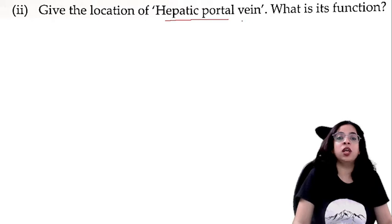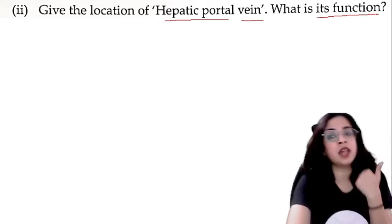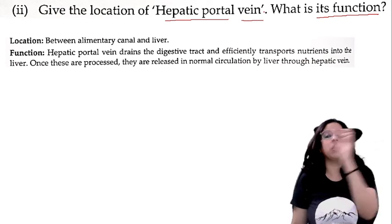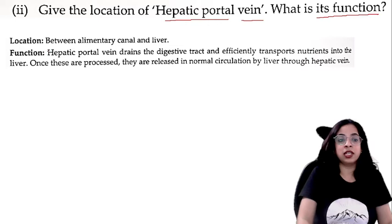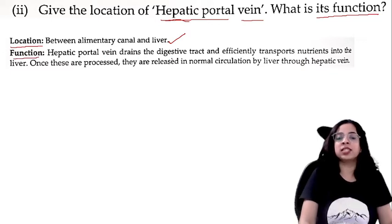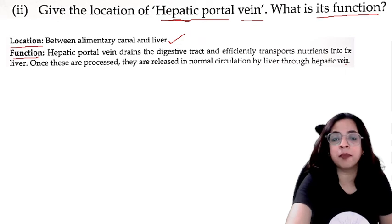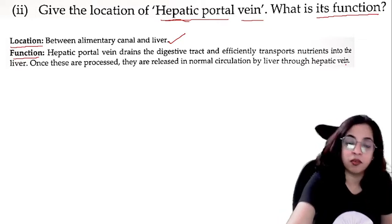Give the location of the hepatic portal vein and state its function. Read carefully — both location and function are asked, so write them on two different lines or highlight them so the examiner can distinguish. Location: between the alimentary canal and the liver. Function: the hepatic portal vein drains the digestive tract and efficiently transports nutrients into the liver. Once processed, they are released into normal circulation by the liver through the hepatic portal vein.